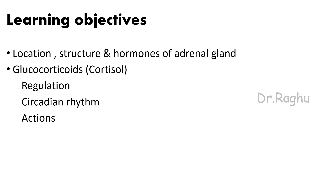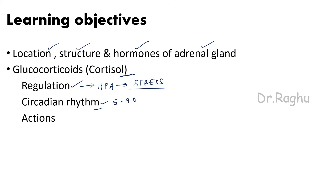Let's recap what we have learned in this video. We started with the location, structure, and hormones produced from the adrenal gland. Then we learned about cortisol regulation — remember the HPA axis and that stress is the most important regulator. Then the circadian rhythm — 5 to 9 am is when there is maximum secretion. Then we covered the many actions of cortisol: action on metabolism, the permissive action, anti-inflammatory action, anti-allergic action, action on bone, connective tissue, and many others.